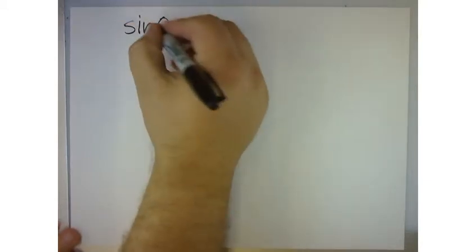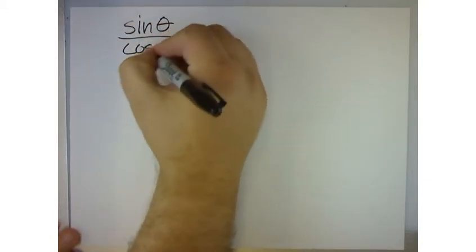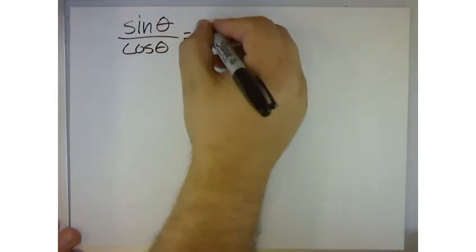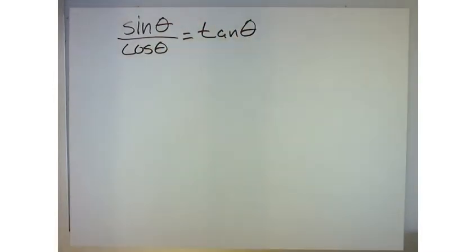Sine of theta over cosine of theta equals tangent of theta. Alright, so we need to show or prove that somehow, right?